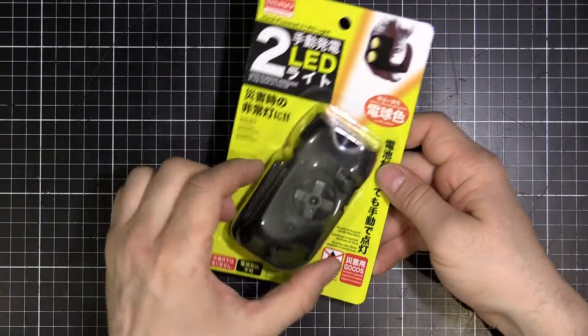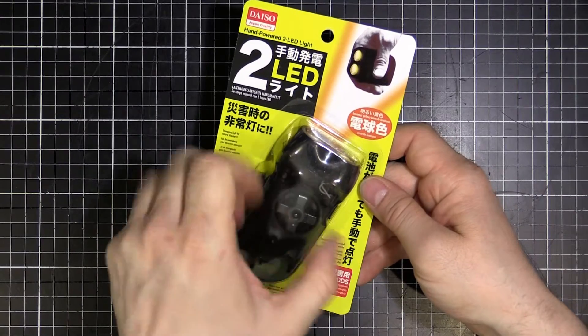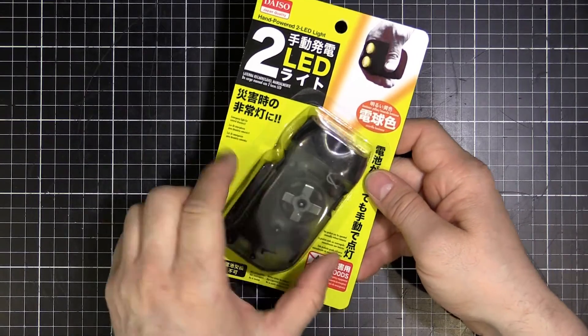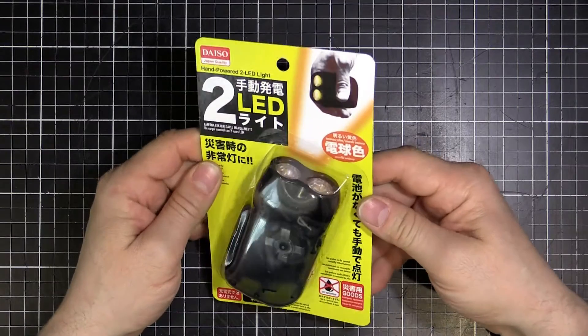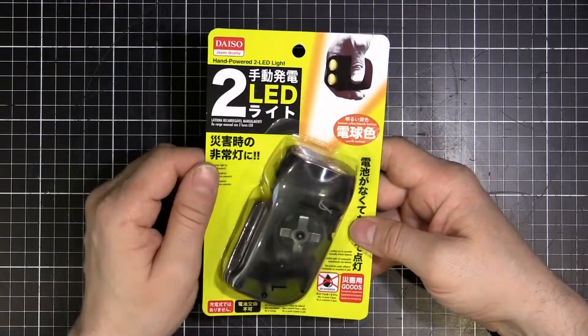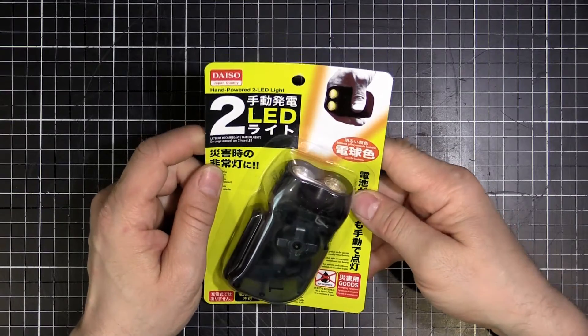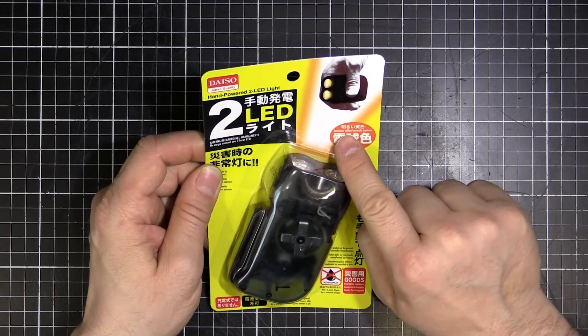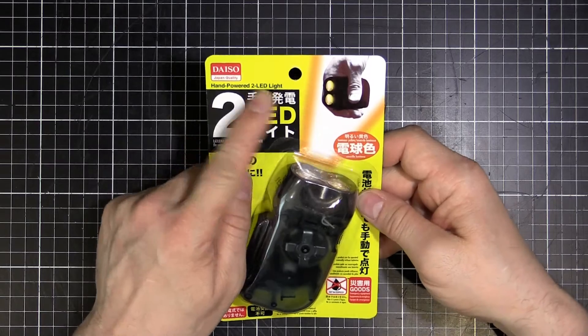And it's one of those hand grip generating torches, a flashlight, where you've got the generator inside and you've got the lever that you push. So I thought we'd pull it apart and see what's inside. It's only a dollar, so I might find some useful parts we can use in other projects. It tells me it's a luminous yellow color, hand-powered two LED light.